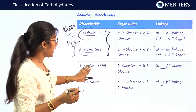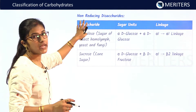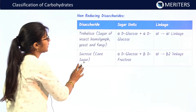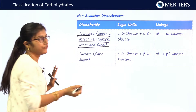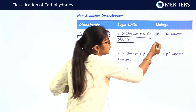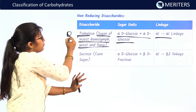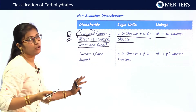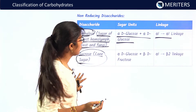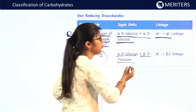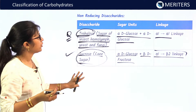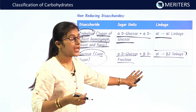Among non-reducing disaccharides: trehalose is the sugar of insect hemolymph, yeast, and fungi, with sugar units alpha-D-glucose and alpha-D-glucose and an alpha-1,alpha-1 linkage. Sucrose, or cane sugar, has alpha-D-glucose and beta-D-fructose with an alpha-1,beta-2 linkage. You should know both the linkages and sugar units for these non-reducing disaccharides.